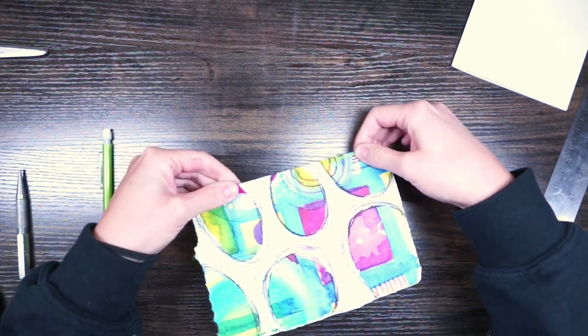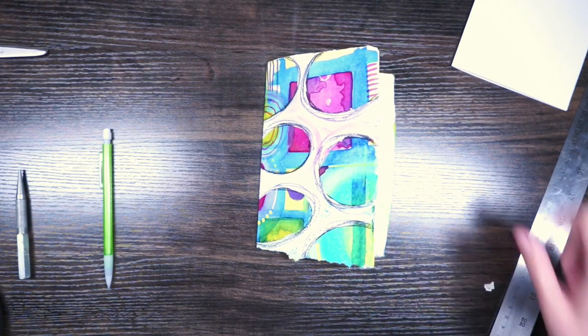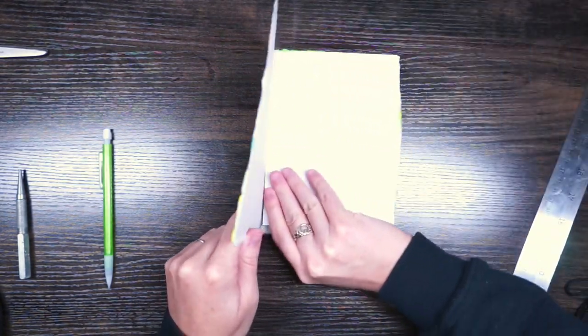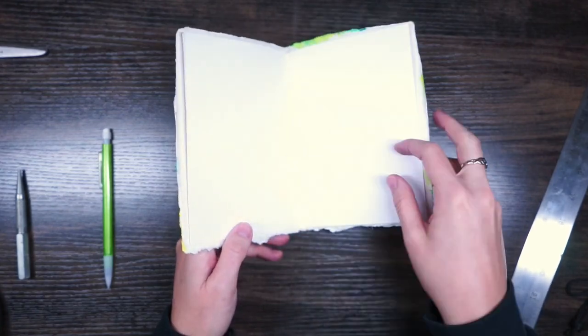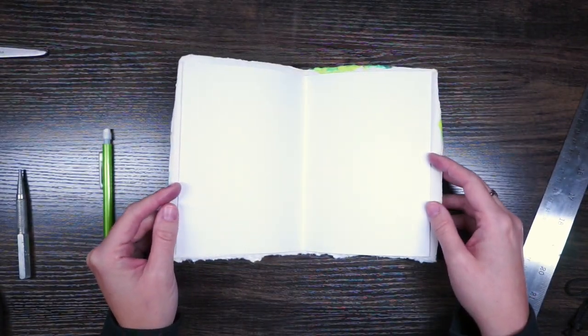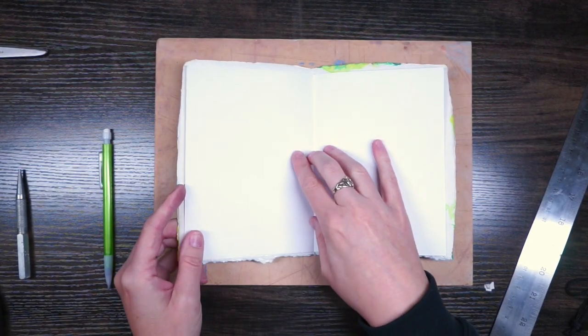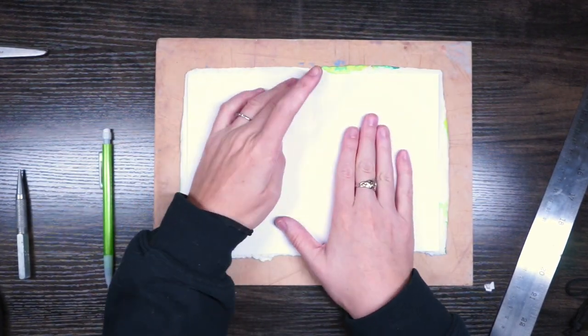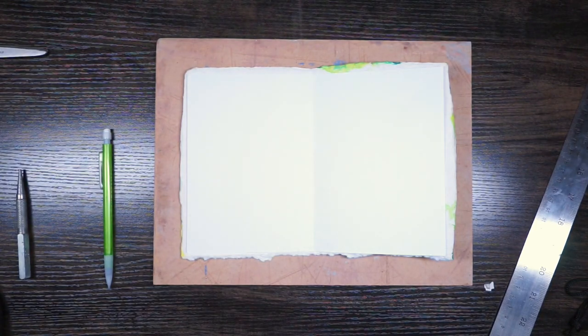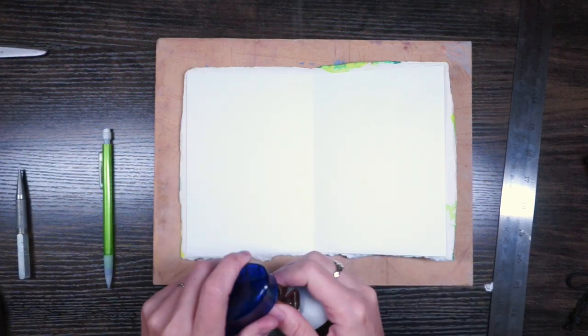Step one is complete. We have our papers folded and they sit nicely inside of one another. Now we need to create some holes. I have this little board here that is going to protect my table from any damage. I'm going to open this back up again, and then I need to decide where I need to put my holes.